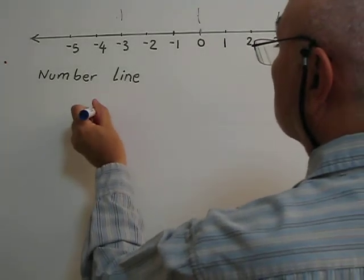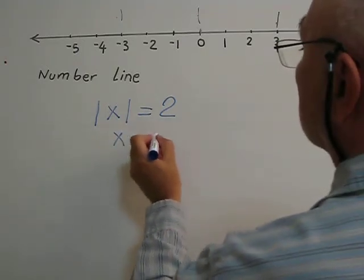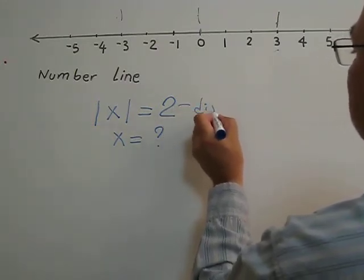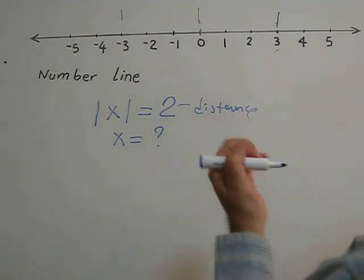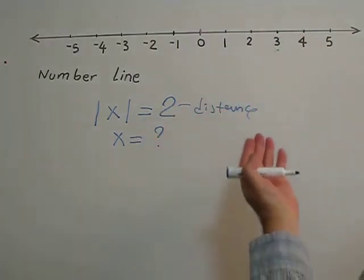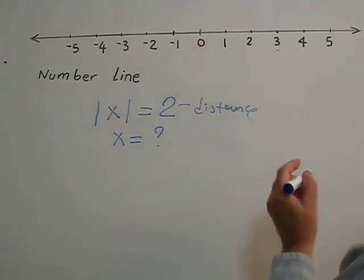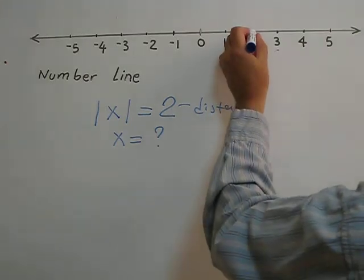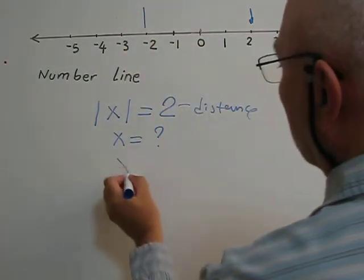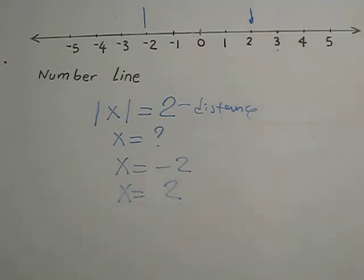What if the absolute value of x equals 2? The question is: what is x? Since absolute value is distance from the origin, we need numbers that are 2 units away from the origin on the number line. There are two locations: positive 2 and negative 2. So x can be negative 2 or positive 2. There are two solutions.